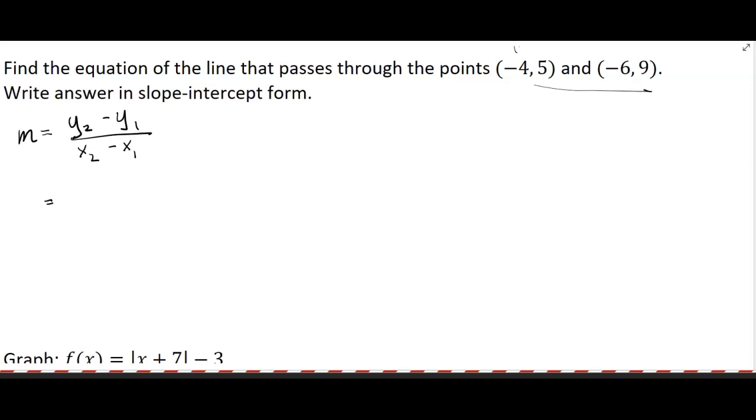For us, this would be x sub 1, y sub 1, x sub 2, y sub 2. You don't have to do it in that order; it's just easier to be consistent. But 9 minus 5 over negative 6 minus negative 4, so that's going to give you 4 over negative 2, which means your slope is going to be negative 2.